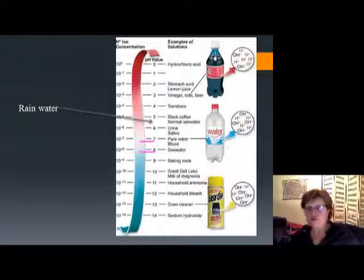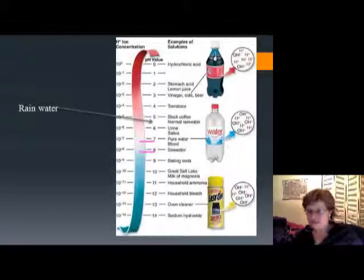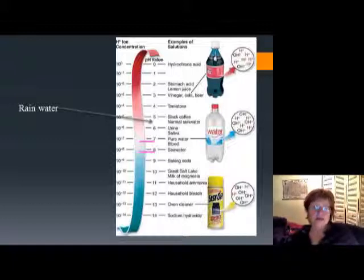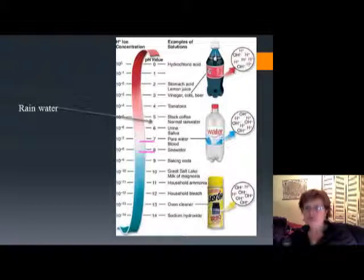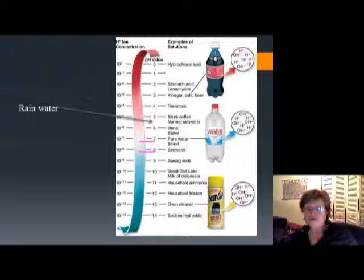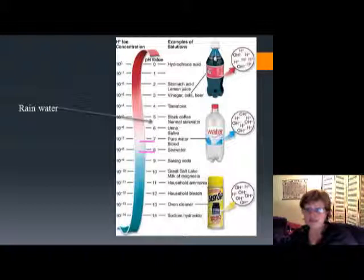Our industry produces a lot of acid, so today seawater is losing its ability to buffer back to 8.2 and is starting to acidify. On the other end, household cleaning supplies like oven cleaner and bleach have a pH of about 13 — they are very concentrated bases.